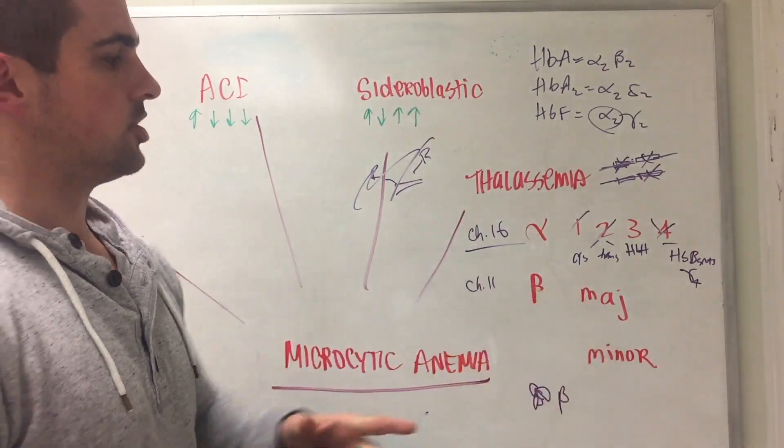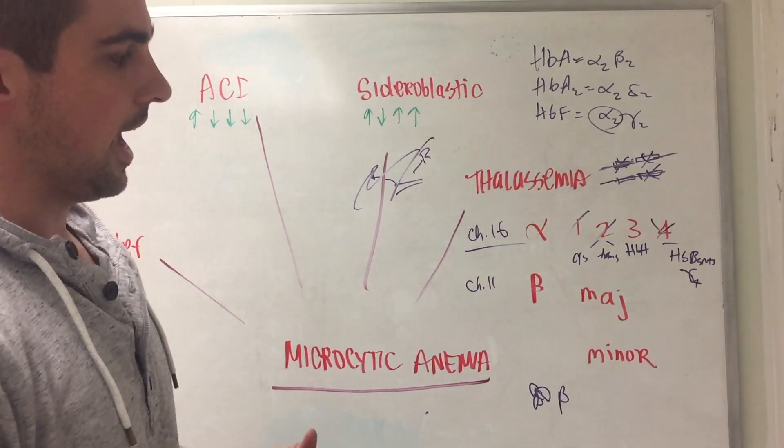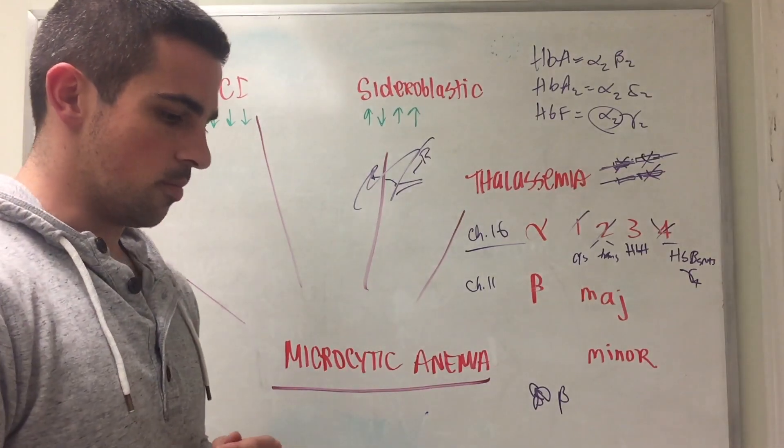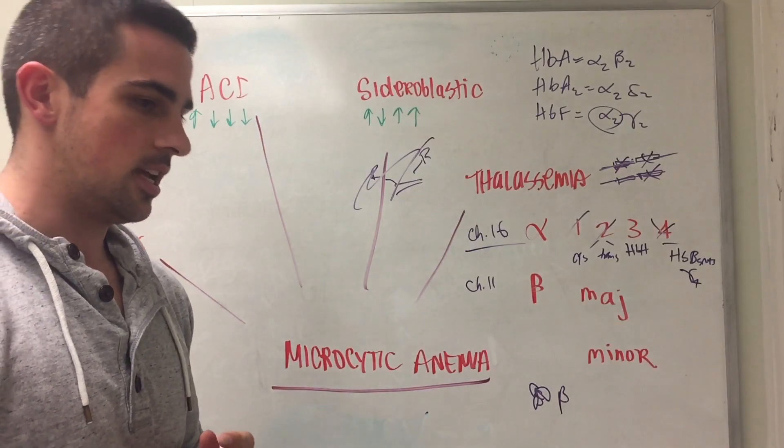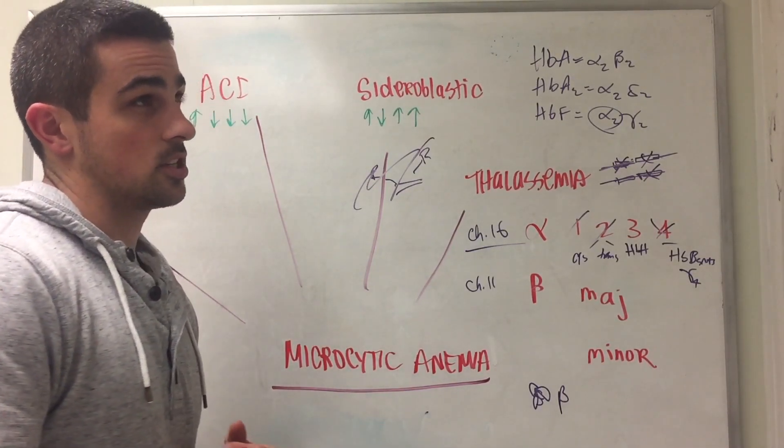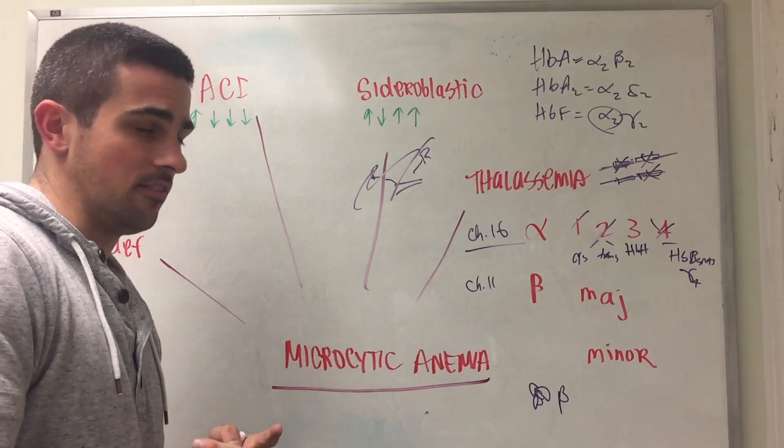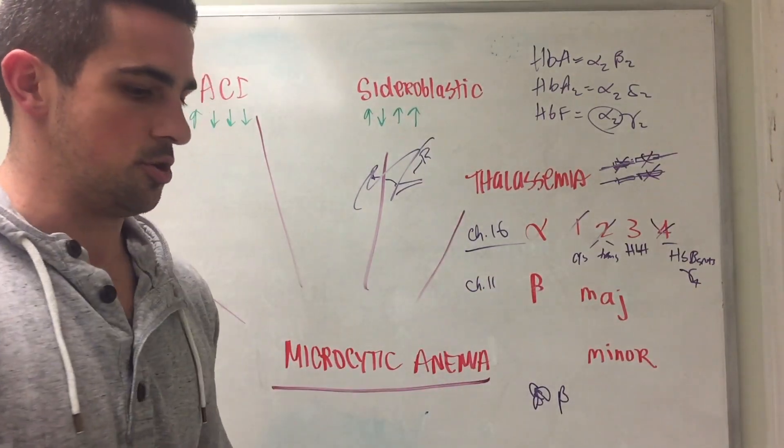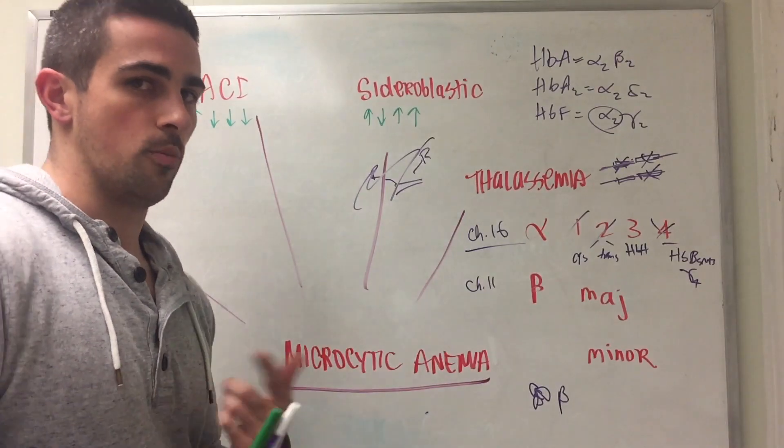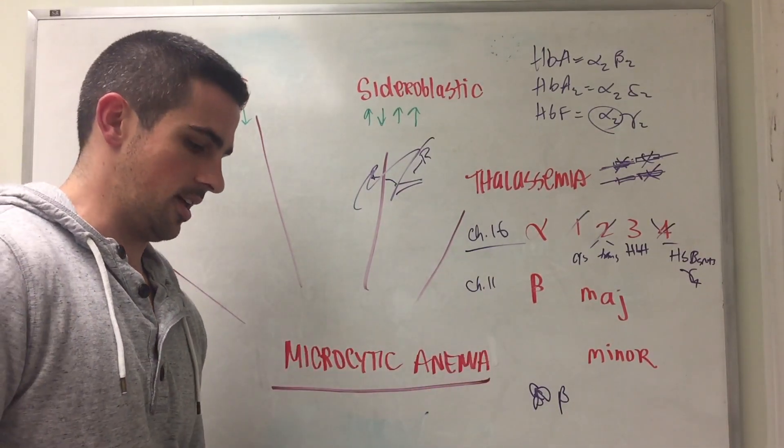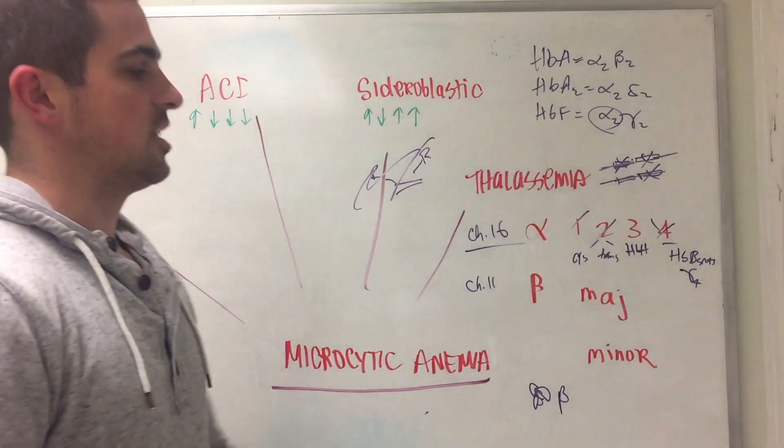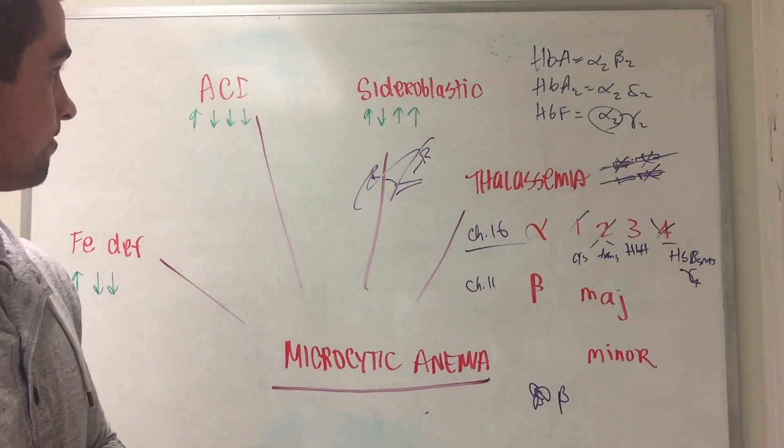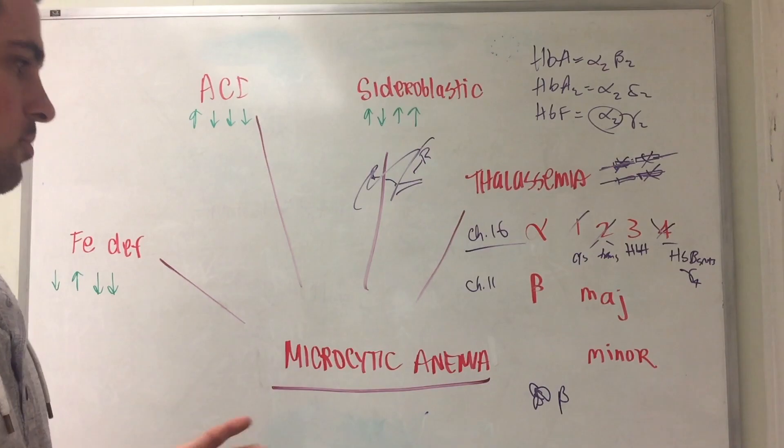When you have beta thalassemia you're going to get something with a crew cut appearance on X-ray. This is important because it shows the body really needs to make red blood cells but is incapable of making them in the current areas. In the bone marrow it's not able to make enough, so it has to now expand. So you have extramedullary hematopoiesis. This is going to expand to different areas. You can have the liver or spleen or other bones that have bone marrow that are going to start making them. Usually it's in the medullary region of the proximal portions of your femur where most red blood cells are made. But you can extend that out when the body's put under stress.